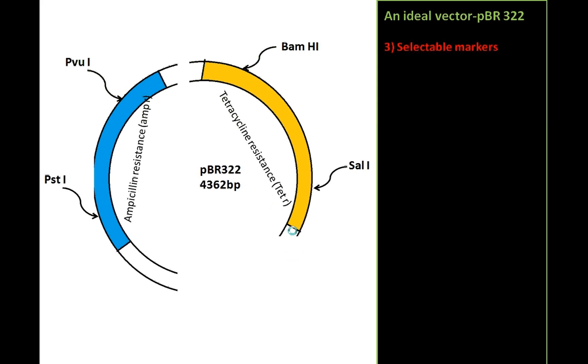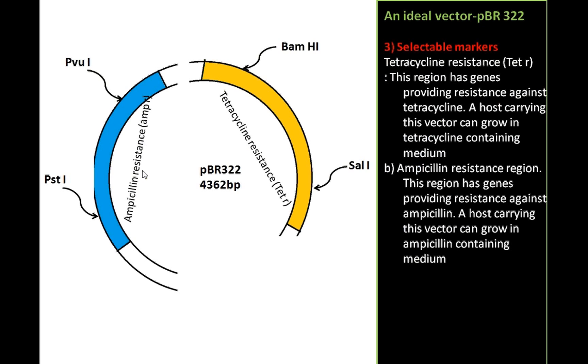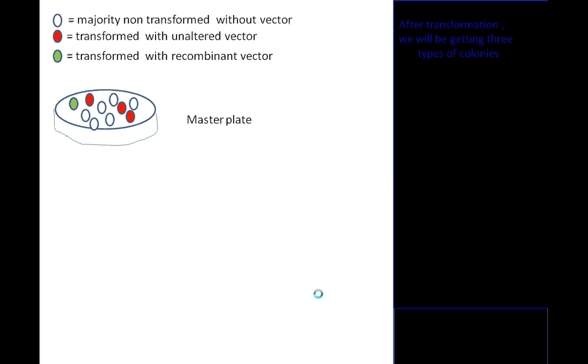Now, the third thing, that is the selectable markers. In pBR322, there are two selectable markers. You can see right here, this is a tetracycline resistance region. This region has genes responsible for providing resistance to antibiotic tetracycline. You can see the second marker, that is ampicillin resistant region. This region has genes providing resistance against ampicillin. A host carrying this vector can grow in ampicillin-containing medium.